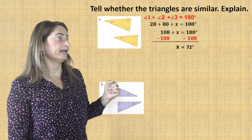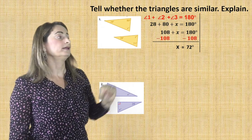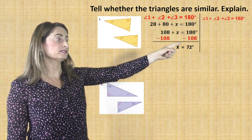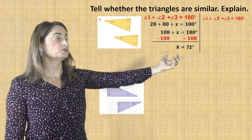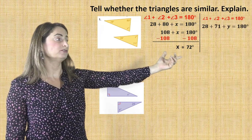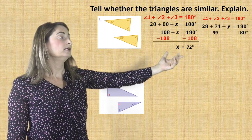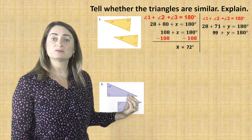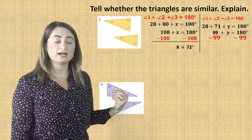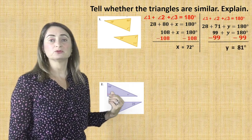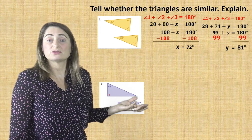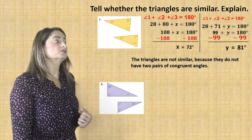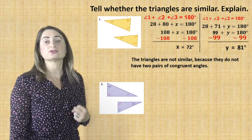Now I need to find the second angle, so I'm going to find angle y for the second triangle. Again, write the equation: angle 1 plus angle 2 plus angle 3 equals 180. Substitute the numbers: 28 plus 71 plus y equals 180. Combine like terms: 99 plus y equals 180. Using the subtraction property of equality, subtract 99 from both sides — you end up with y equals 81. Did you find two pairs of congruent angles? No. Therefore, the triangles are not similar because they do not have two pairs of congruent angles.